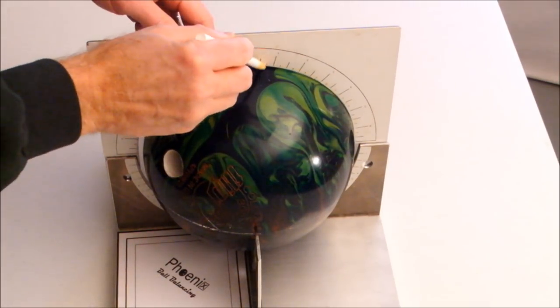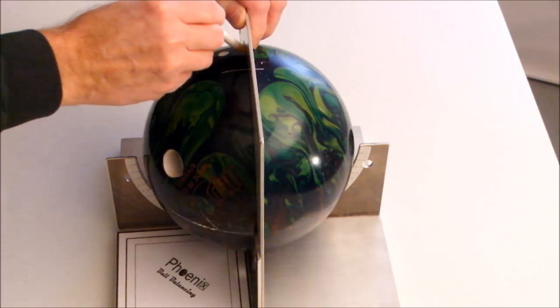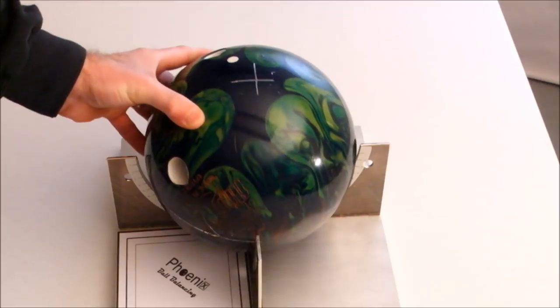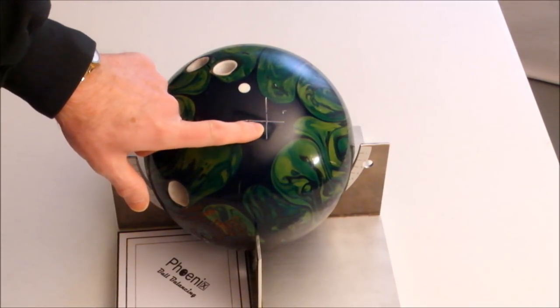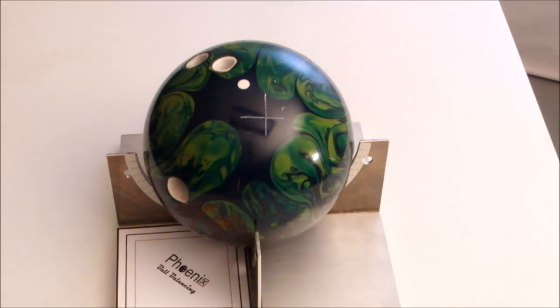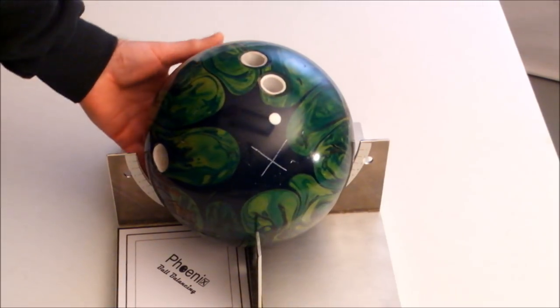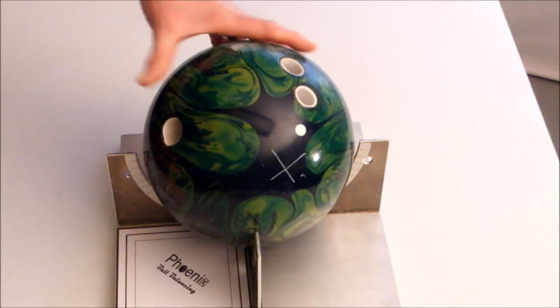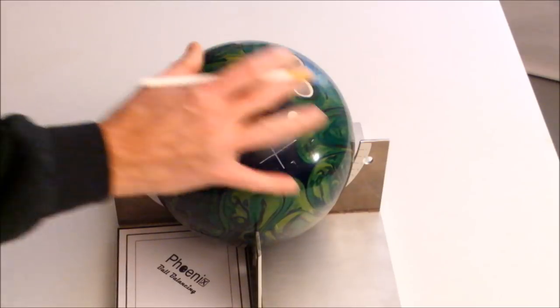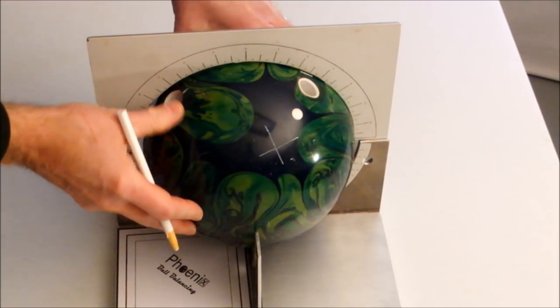which indicates the bowler's positive axis point, or PAP. After you've located the PAP, it's time to determine the horizontal and vertical distances from the center of grip to the PAP. I want to do a quick layout of the ball to find the center grip.